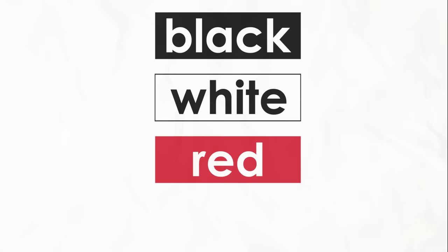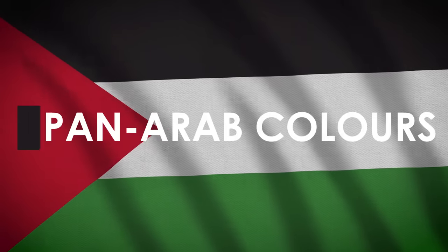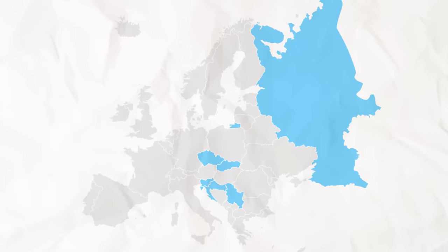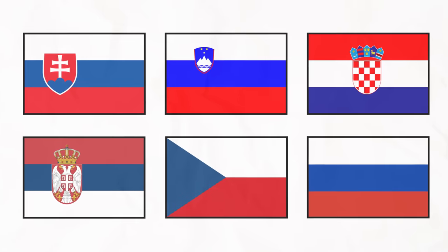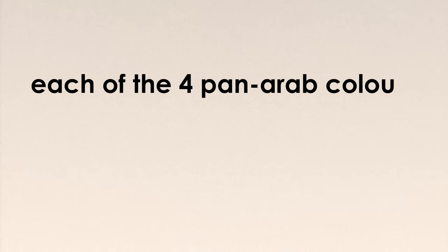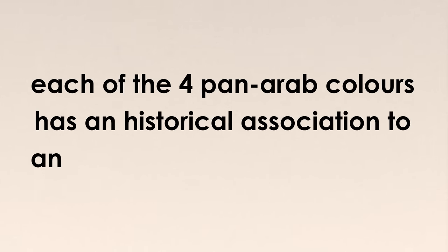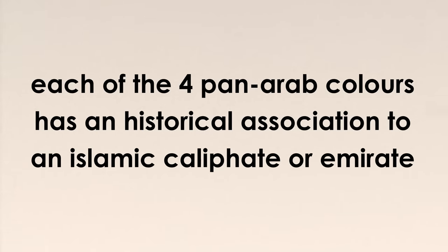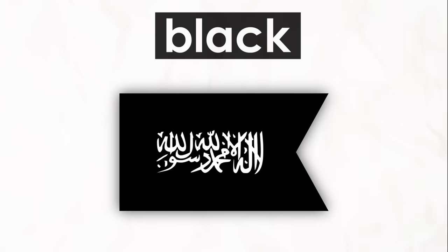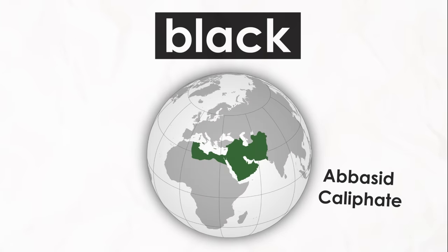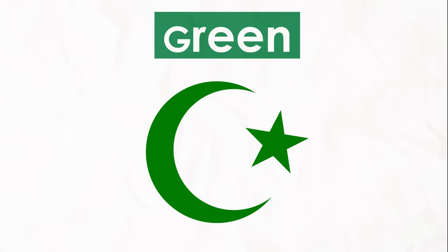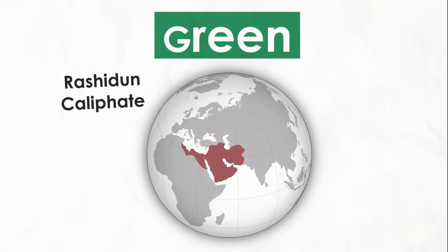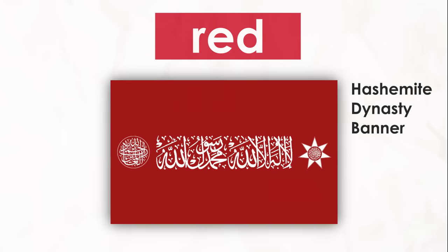The black, white, red, and green colors are known as the pan-Arab colors, in similarity to, for instance, the pan-Slavic colors of red, white, and blue. Individually and upon its creation, each of the four pan-Arab colors were intended to represent a certain aspect of the Arabs and their history. Black represents the black standard used by the Rashidun and Abbasid Caliphates, while white was the dynastic color of the Umayyad and Fatimid Caliphates. Green is associated with Islam and also representative of the Rashidun Caliphate. Finally, red was the Hashemite dynastic color.